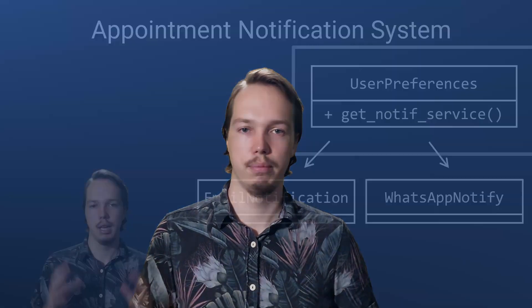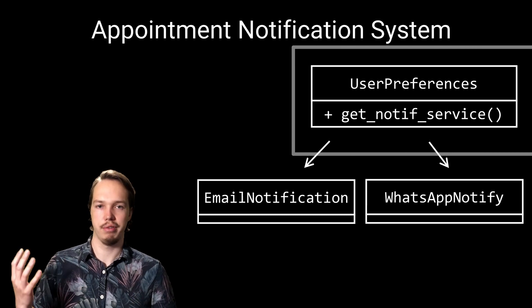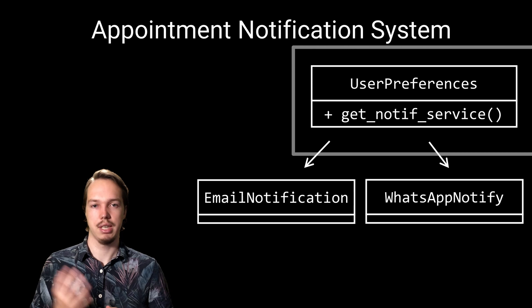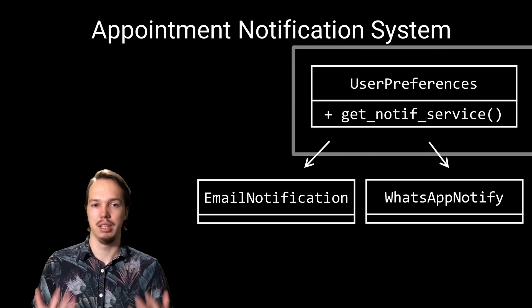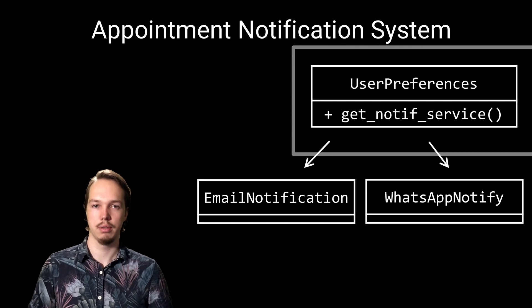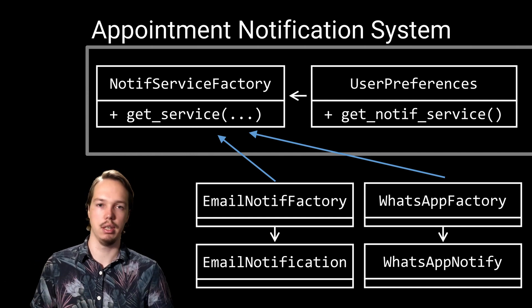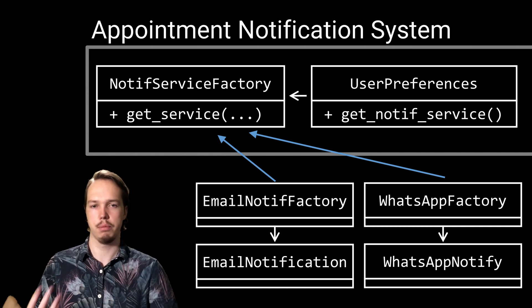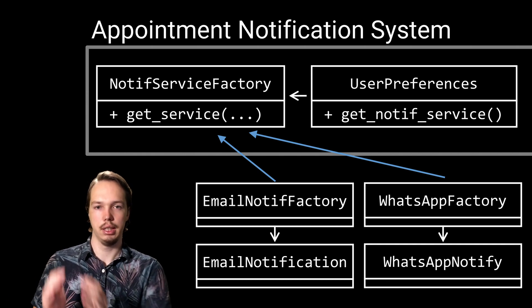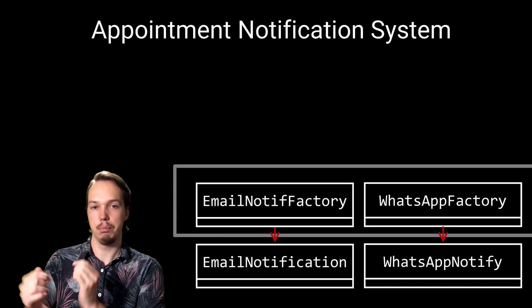A simple example where you cannot invert the dependency is when instantiating concrete classes. Let's zoom in on the design of the user-preferences component. The design follows a variation of the factory pattern. It is responsible for the instantiation of the correct notification classes, which means there has to be a source code dependency to those classes. There is no way to shield this user-preferences component from changes in those notification components. Of course, we could still move this problem by adding a dedicated abstract factory for the creation of these notification classes — this might even be desirable from a single responsibility point of view. But still, in some part of our system, we are going to be instantiating these concrete notification classes, and there we simply cannot invert the dependency.